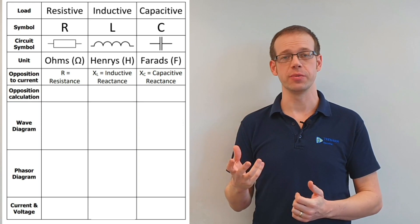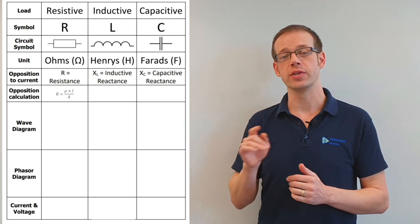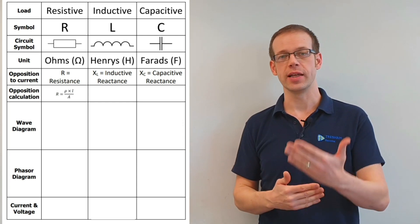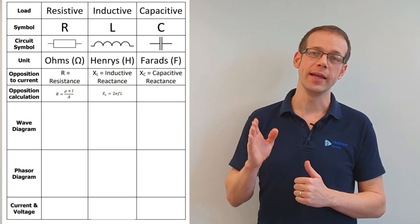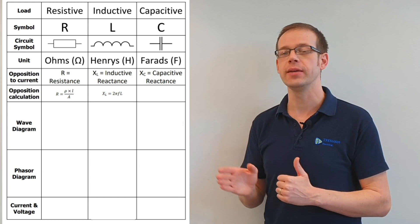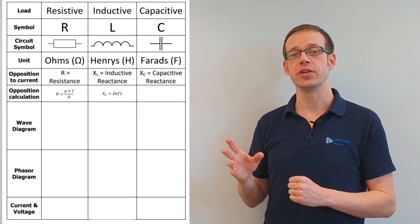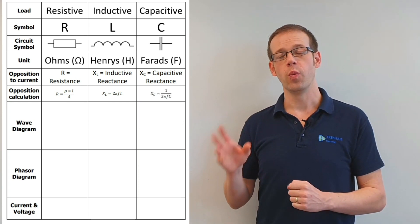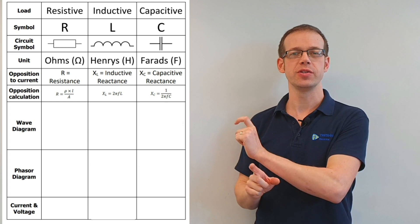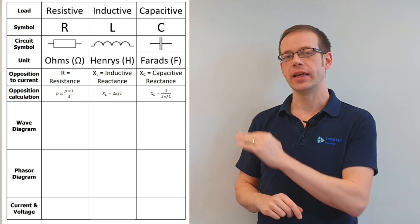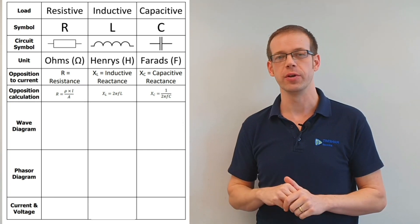We then looked at the calculations used to find these oppositions to current flow. For resistance: R equals rho times L over A — resistivity times length divided by cross-sectional area. For inductive reactance: Xl equals 2πfl, where f is frequency and Xl is the symbol for inductive reactance. For capacitive reactance: Xc equals 1 over 2πfc. Interestingly, the bottom of that formula looks similar to the inductive reactance formula, but it's the inverse, which leads to some interesting conclusions we'll explore shortly.